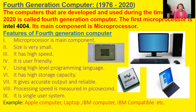Number 9, it is a single user system. Single user system means one user can work at a time, while multi-user means many users can work at the same time. This microcomputer, or 4th generation computer, is a single user system. A computer that uses a microprocessor is called a microcomputer. Examples of 4th generation computers are Apple computer, laptop, IBM computer, IBM compatible computer, etc.